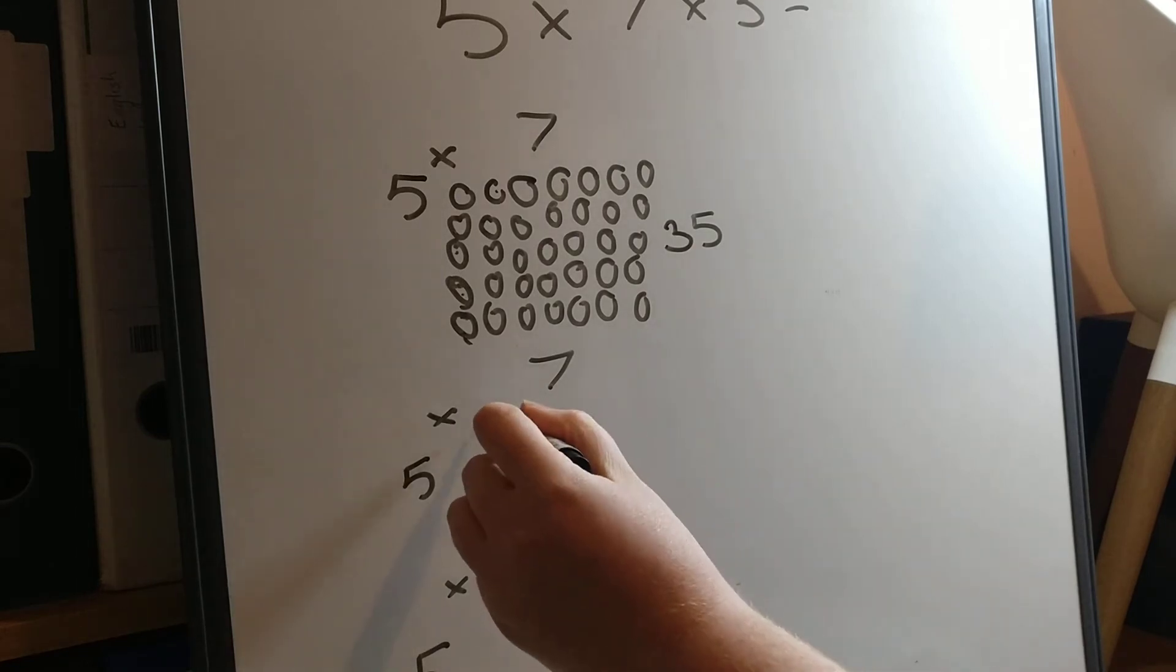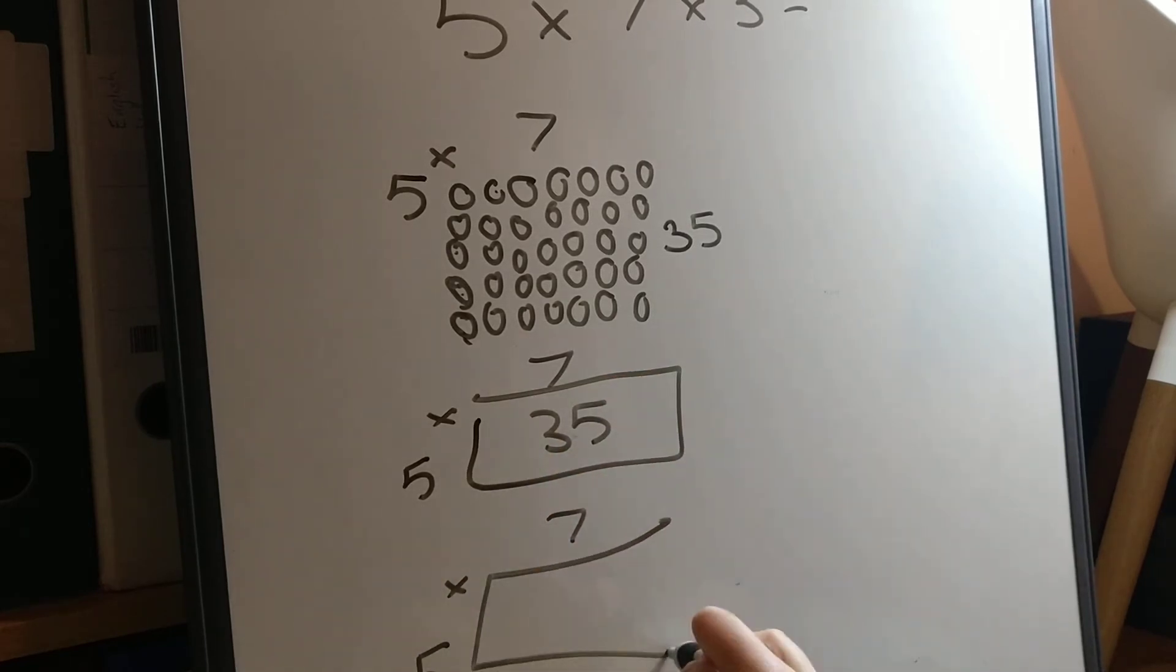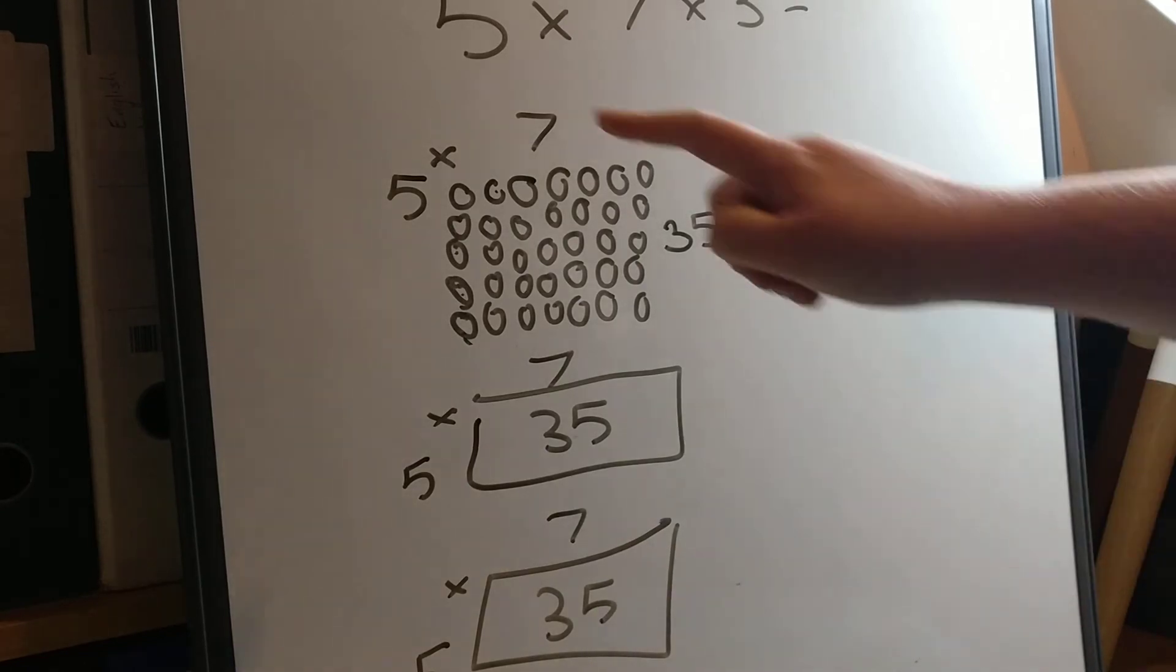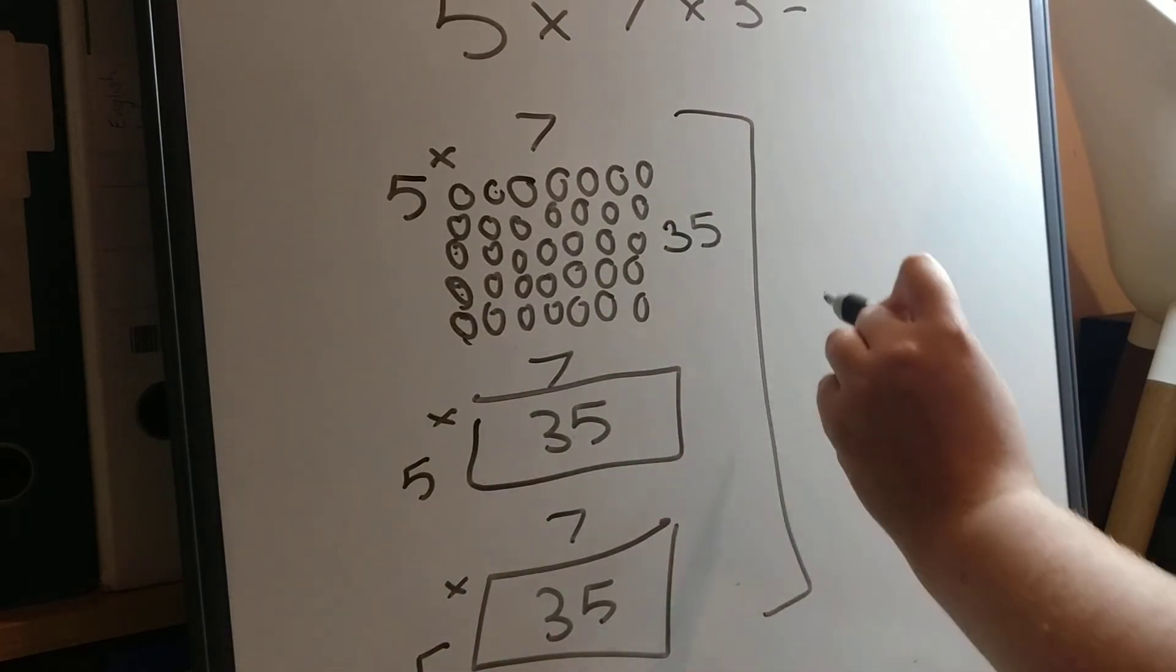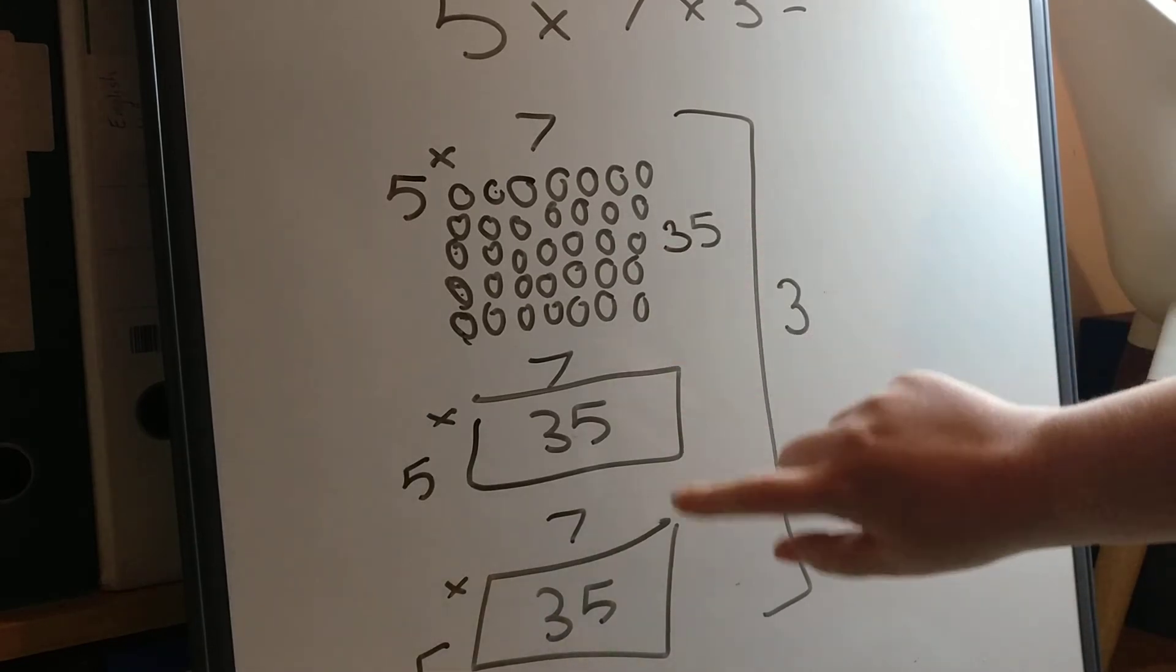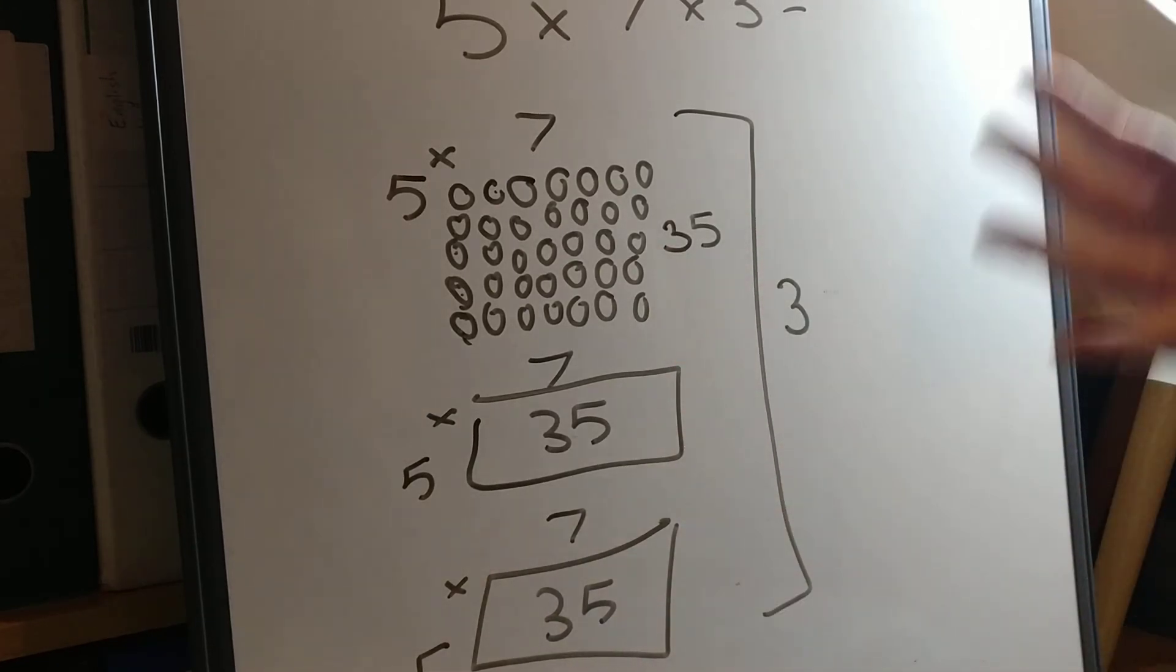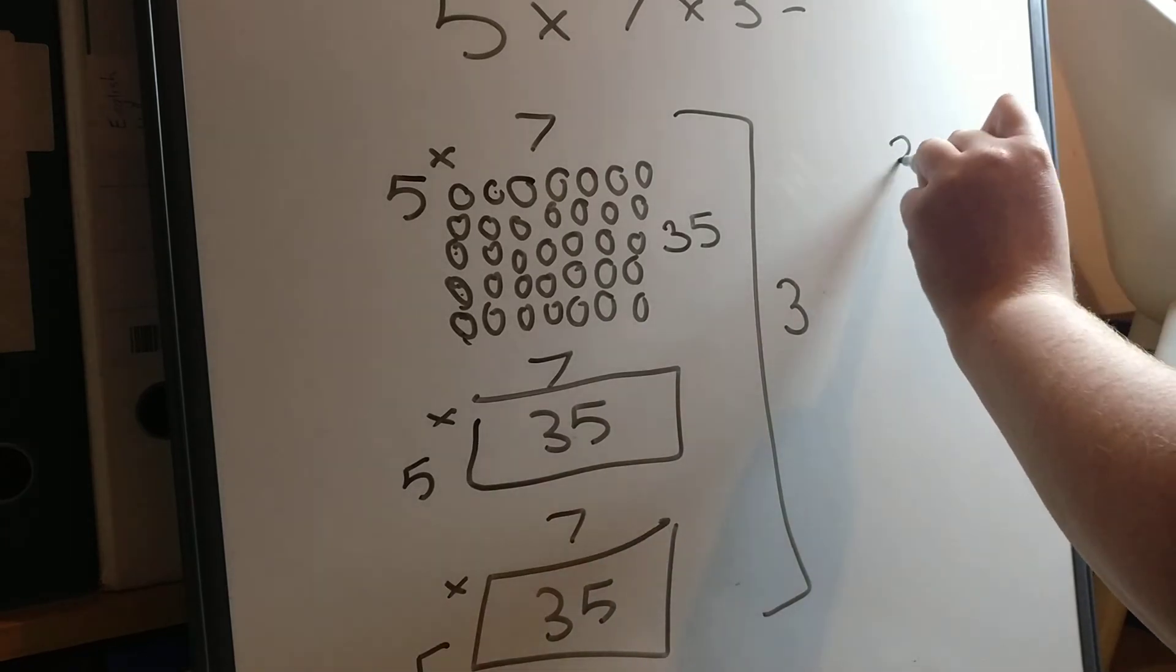So this array here would also be 35. And this array here would also be 35. So 5 times 7, three times. One, two, three. Three times. So now we just need to find the total. And if you have built your array three times, you could count all your counters. That's going to take quite a long time. So what I'm going to do, I'm just going to add them together. 35, add 35, add 35.